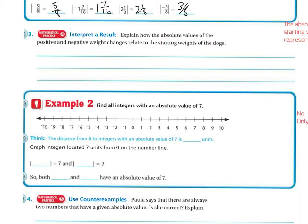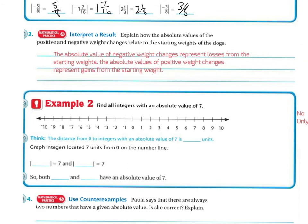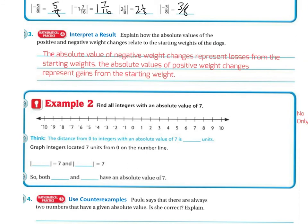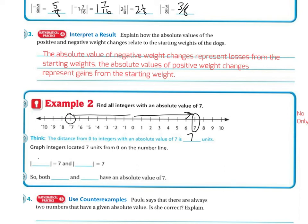Interpret the result: explain how absolute values of positive and negative weight changes relate to the starting weights of the dogs. The absolute value of a negative weight change represents the losses from the starting weights, and the absolute values of the positive weight changes represent the gains from the starting weight. Example 2: find all the integers with an absolute value of 7. The distance from 0 to integers with an absolute value of 7 is 7 units. So 7 is 7 away from 0, and negative 7 is also 7 away from 0. Both 7 and negative 7 have an absolute value of 7.